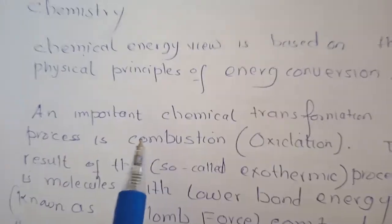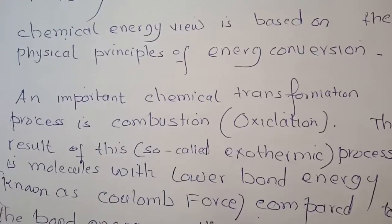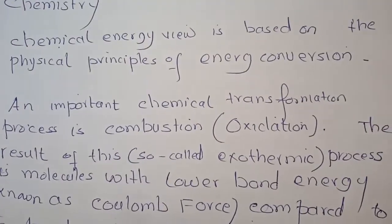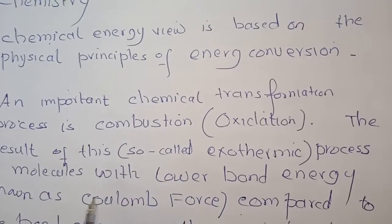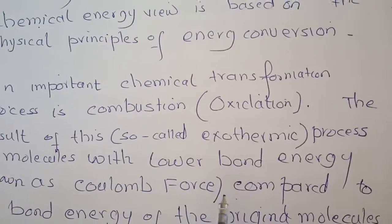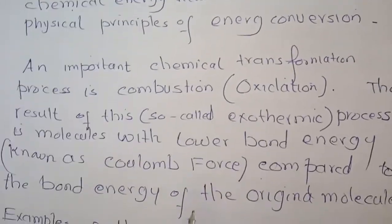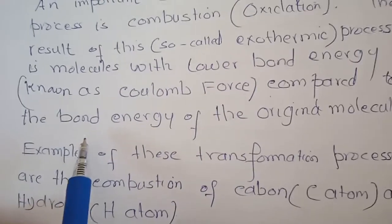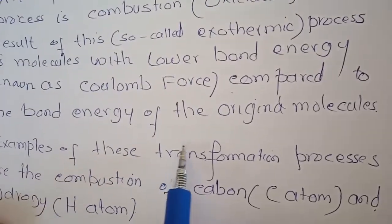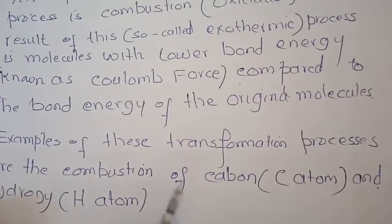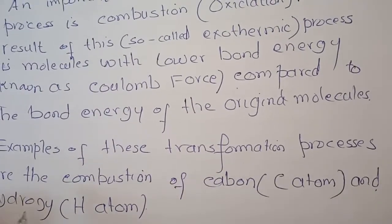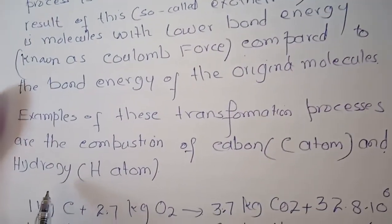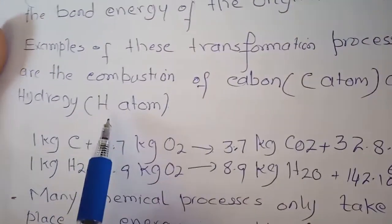An important chemical transformation process is combustion, or oxidation. The result of this so-called exothermic process is molecules with lower bond energy, known as Coulomb force, compared to the bond energy of the original molecules. Examples of these transformation oxidation processes are the oxidation of carbon, C atom, and hydrogen, H atom.